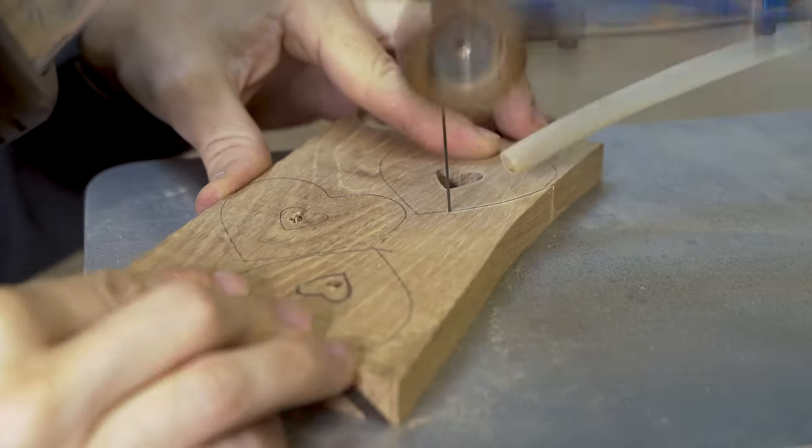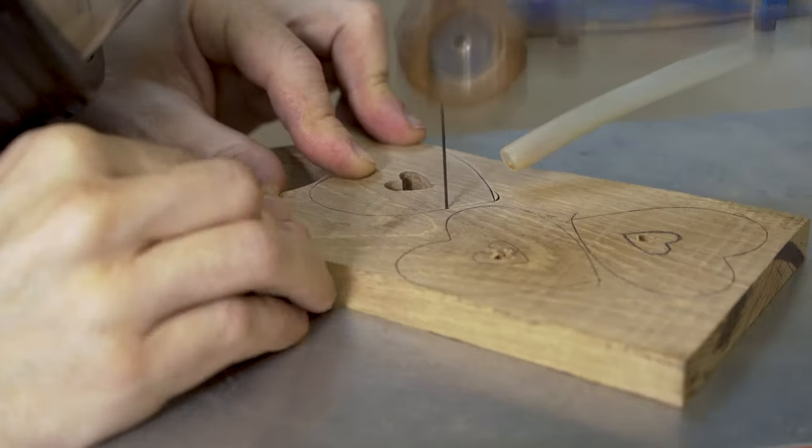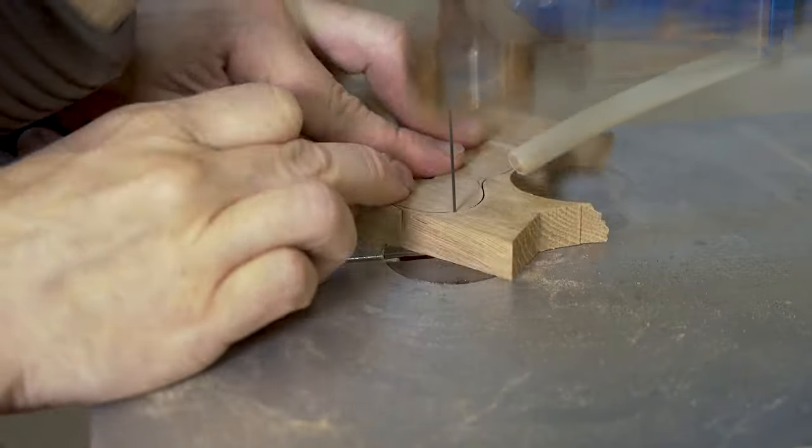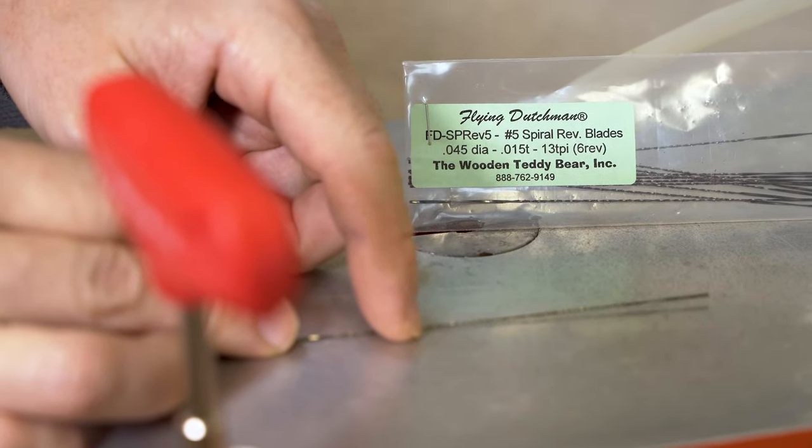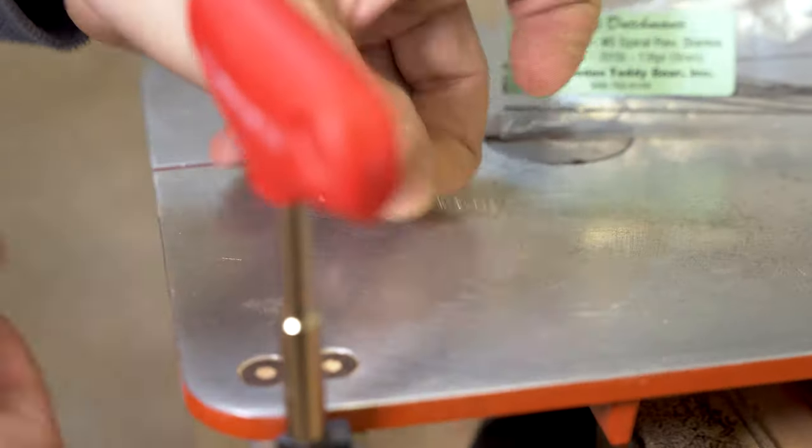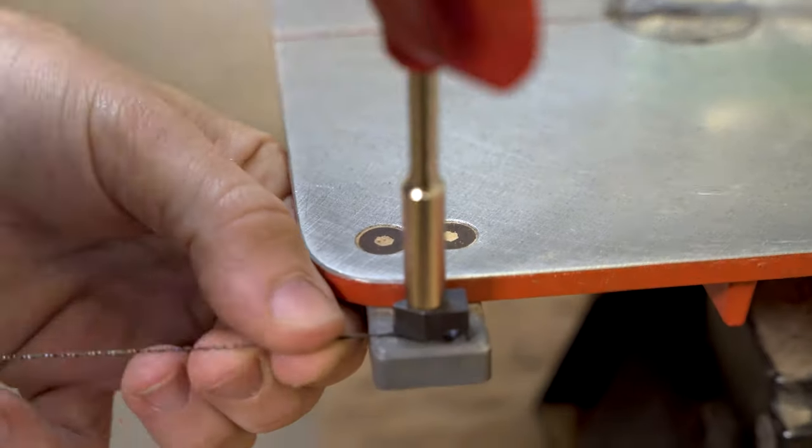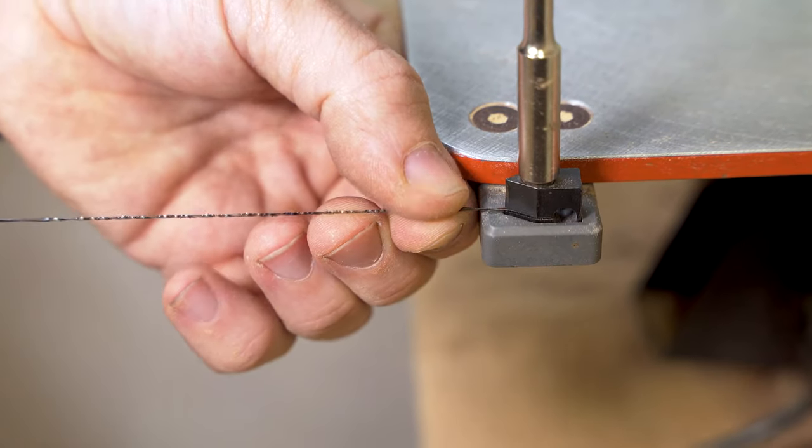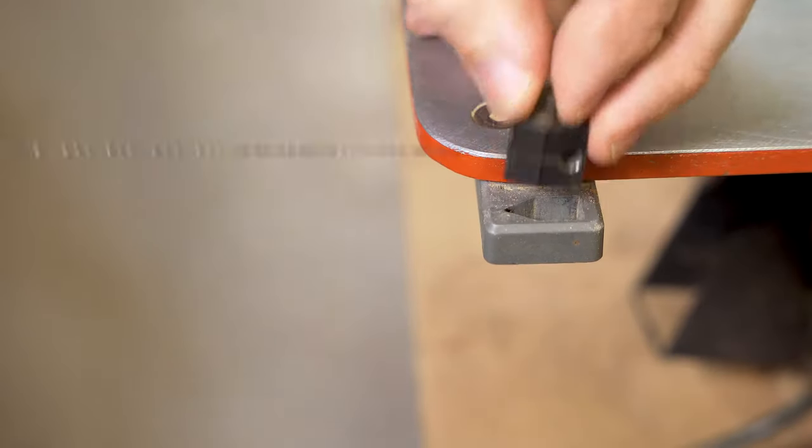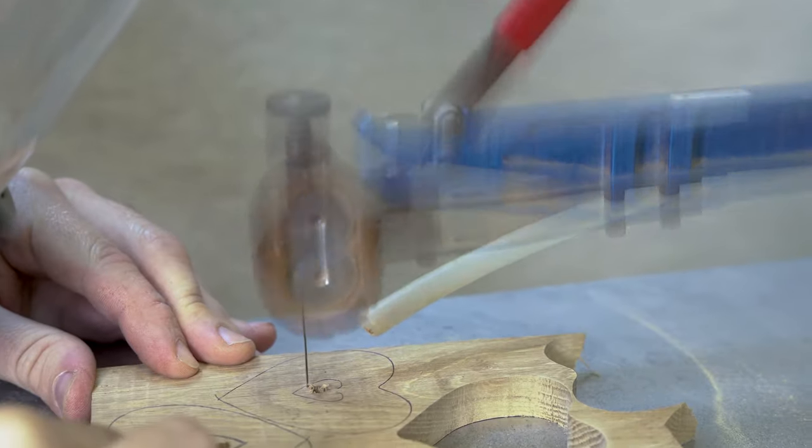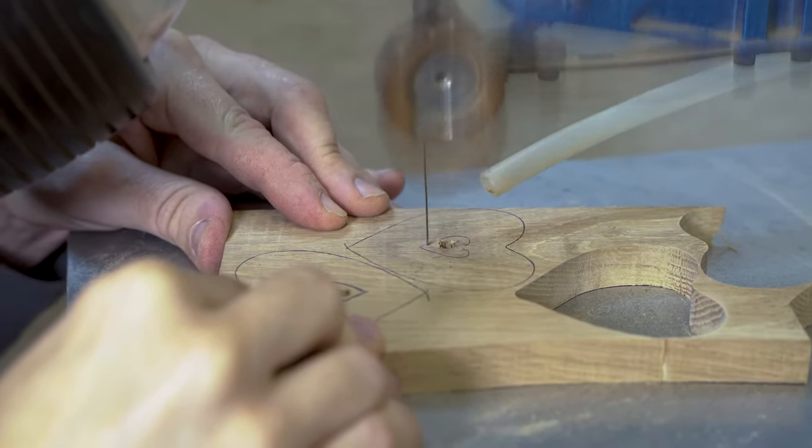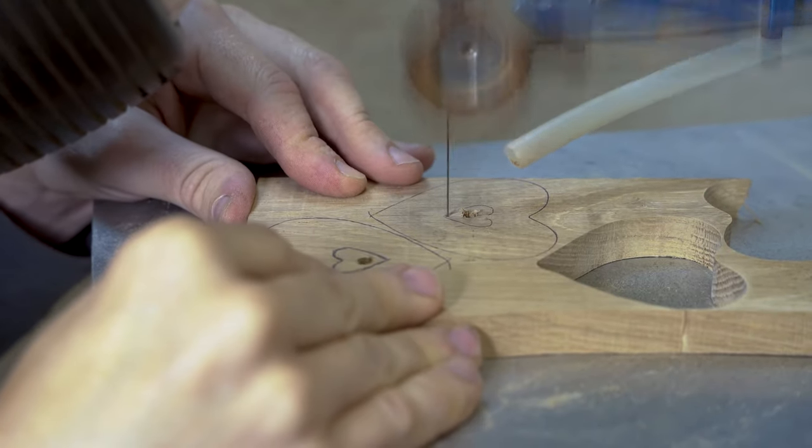Onto our third blade and this is something that I've explored many times and have never had much luck with. This time we are trying a spiral blade and this was a Flying Dutchman number five spiral reverse blade. What I would say with this one is it is the best spiral blade that I have ever worked with. Having said that, I personally do not get on with spiral blades.